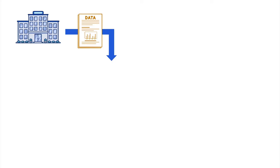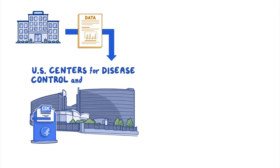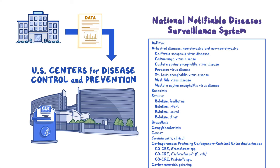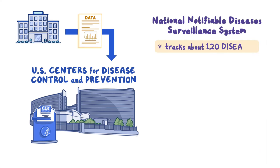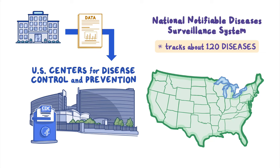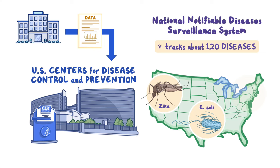Depending on the disease and situation, health departments may also notify other public health agencies like the U.S. Centers for Disease Control and Prevention, or CDC. This information is added to CDC's National Notifiable Diseases Surveillance System, which tracks about 120 diseases across the nation. These include infectious diseases such as Zika, foodborne disease caused by E. coli, and non-infectious conditions such as high levels of lead in a young person's blood. The National Notifiable Diseases Surveillance System helps all levels of public health — local, state, federal — to share health information to monitor, control, and prevent spread of disease.